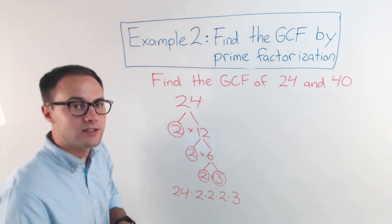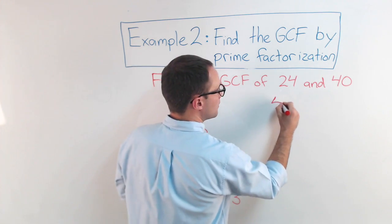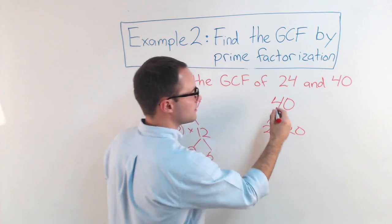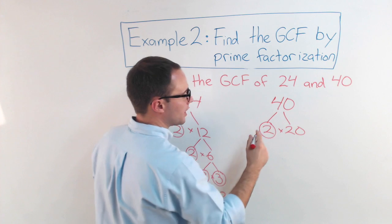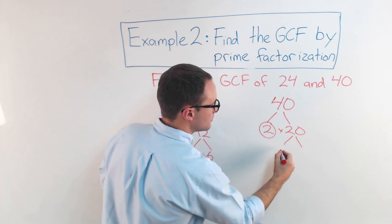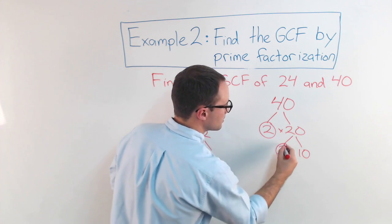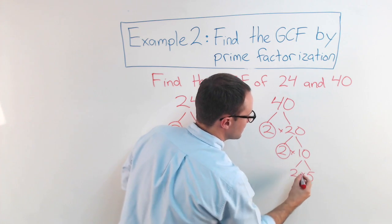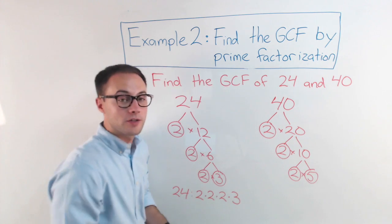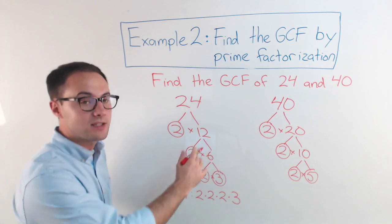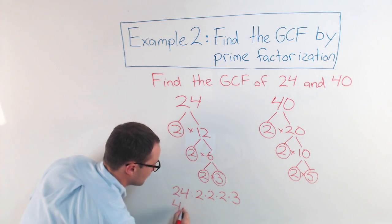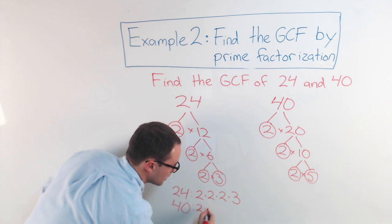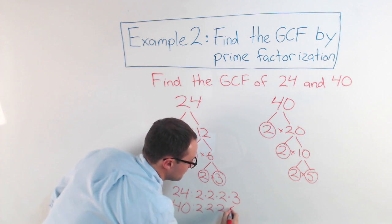Next, let's do prime factorization of 40. 40, I'm going to start with 2 again. 2 times 20 is 40. That's prime. 2 times 10 is 20. There's a prime. And then finally, 2 times 5 is 10. And those are both prime. So my prime factorization of 40 is 2 times 2 times 2 times 5.